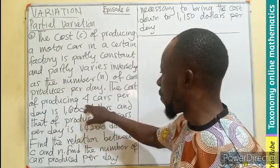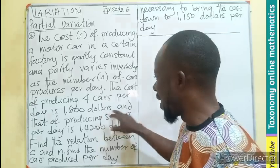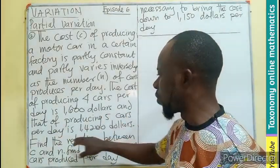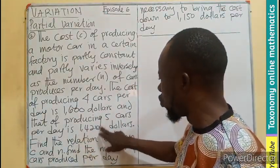The cost of producing four cars per day is $1,600, and that of producing five cars per day is $1,420.